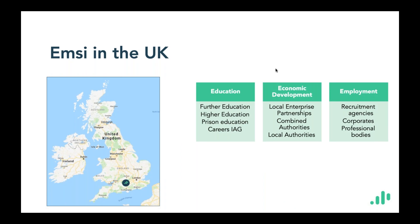We're based in Basingstoke in the UK, and we work across three main sectors. The first is the education sector, which is predominantly FE. We have the biggest footprint in general further education colleges, but we also work across HE, prison education — there are a couple of people on from NOVUS this morning — and the careers IAG sector. Secondly, we work across the economic development sector: organisations such as your local LEPs, combined authorities, county councils, and local authorities.